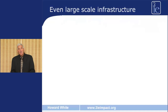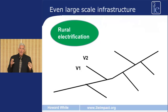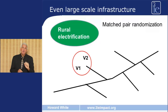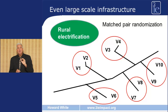Even large scale infrastructure investment can be subject to random assignment. Take the example of rural electrification. Here we've seen the main distribution line, with a number of sub-lines going off it to connect villages five to ten kilometres from the main distribution line. There are two villages which might be connected to the grid via this extension of the distribution. What we do for a random assignment is to match these two villages into a single pair and conduct what's called a matched pair randomisation, where we randomly select one of these two villages to be connected to the grid. We can see similar pairs along each of the different extensions of the grid, and we match each of those pairs and then randomly select one of them in each case.